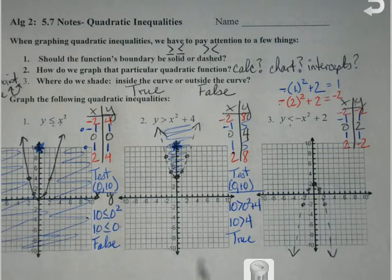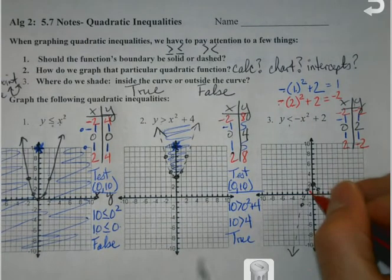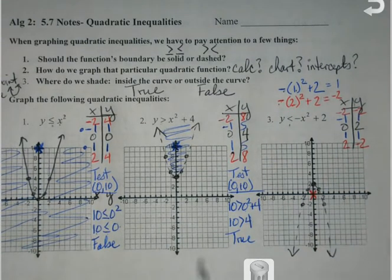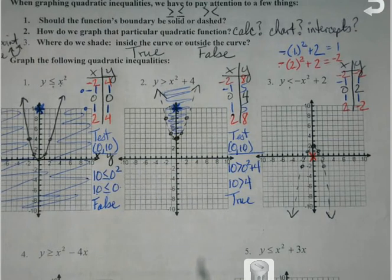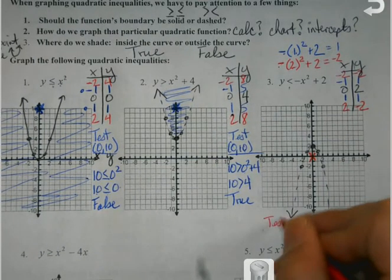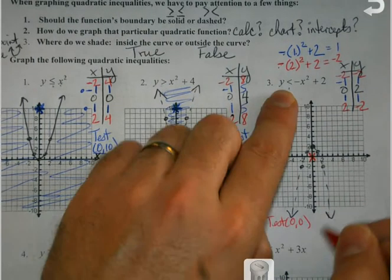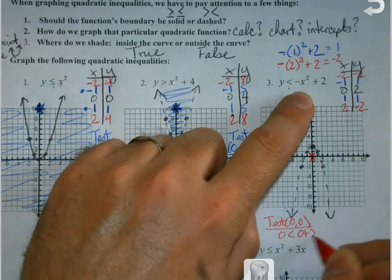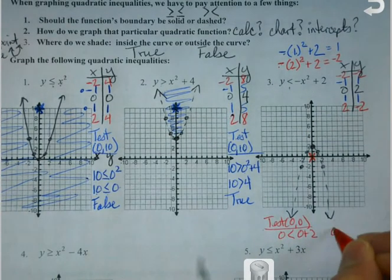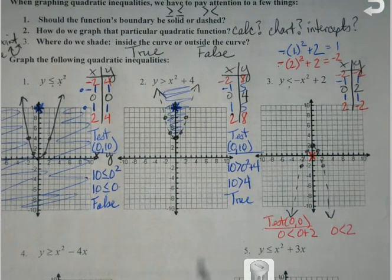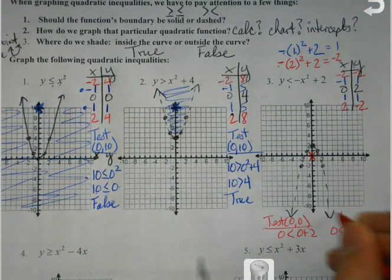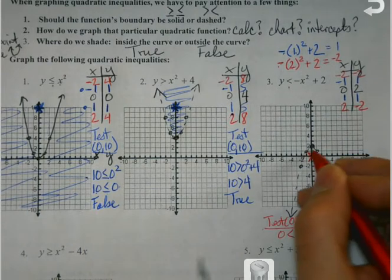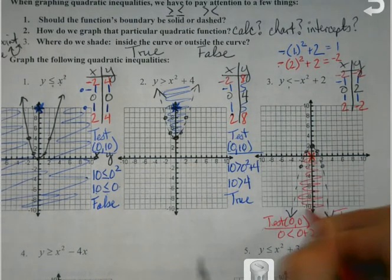I can plot my points, and I should always see the start of a curve — a little wider than a V though. What type of line are we going to connect the dots with? Dotted, because it's not or-equal-to. Now I can't use (0, 10) this time because that wouldn't be inside the parabola. My personal favorite when I have it as an option is (0, 0), because zero just wipes everything out. Zero is less than negative zero squared plus two — is zero less than two? Yes — true. True means shade inside the parabola.